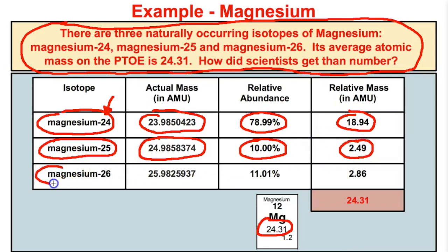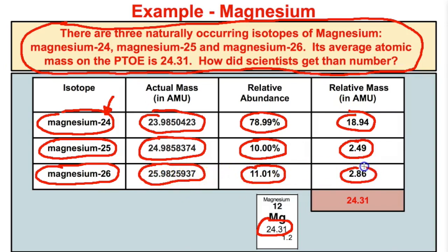Lastly, if we take the third and final naturally occurring isotope of magnesium — magnesium-26 — those little electrons actually have a mass, so the actual mass of magnesium-26 is 25.9825937. Multiplied by the relative abundance, we get that number. And if we add these three numbers up, we will end up with this magic number: 24.31. That is going to be the number that we see at the bottom of each little box on the periodic table.